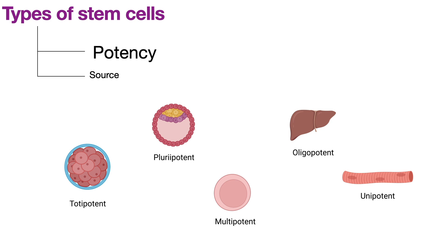The next is multipotent stem cells, found in the later stages of development in the fetus and in adults. For example, the hematopoietic stem cell, which gives rise to different blood cells including granulocytes, T cells, B cells, erythrocytes, and more, is a multipotent stem cell. Oligopotent stem cells are usually found in adults — that is, fully developed organisms after birth. In stem cell biology, adult stem cells means after birth and does not necessarily mean a person above 18.